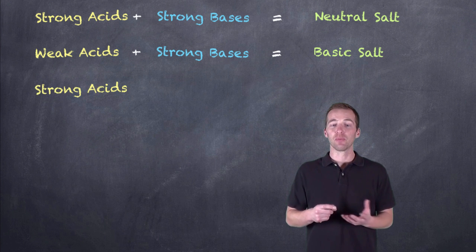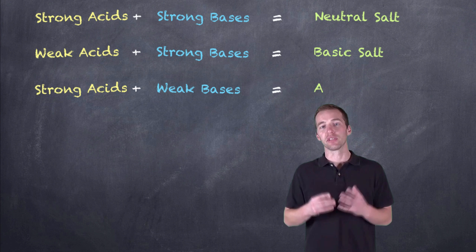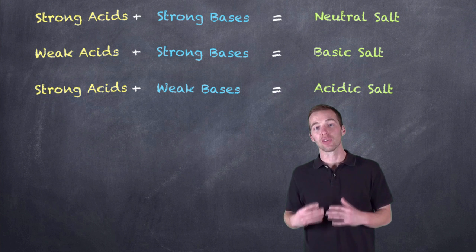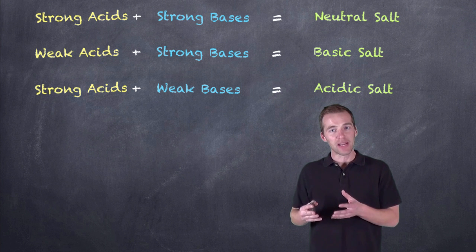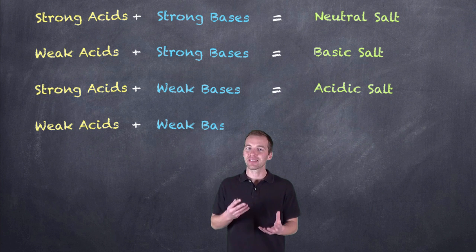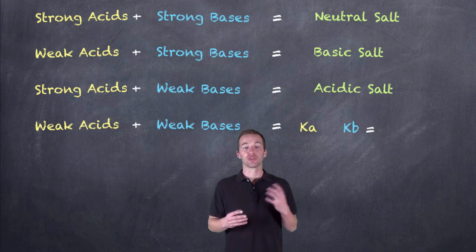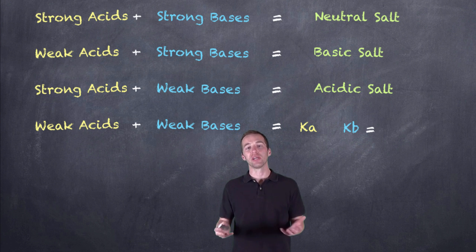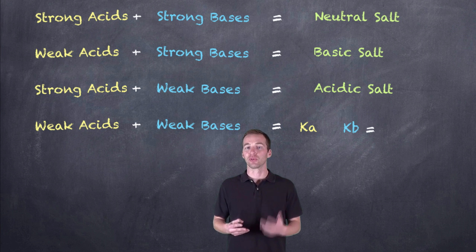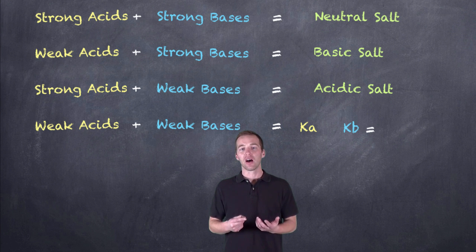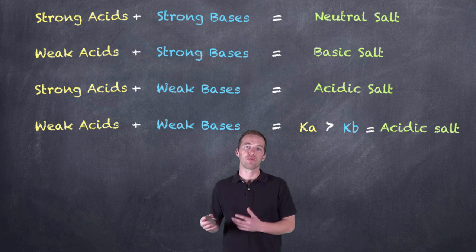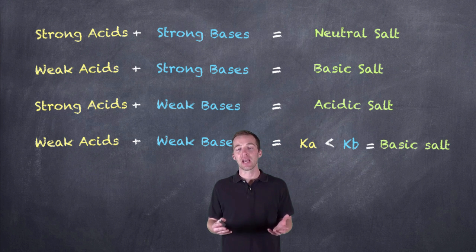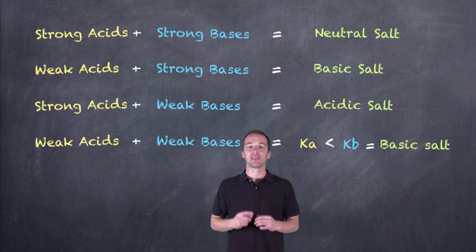A strong acid combined with a weak base would produce an acidic salt, and therefore this solution, once the reaction was complete, would have a pH lower than neutral or lower than 7. Weak bases and weak acids, when they combine — well, that's a little tougher to predict. It really depends on the strength of that weak acid and the strength of that weak base relative to one another, which will dictate whether we have an acidic, neutral, or basic solution. If the Ka of the weak acid is larger than the Kb, then we're going to form an acidic salt. If it's the other way around, where Kb is greater than Ka, we're going to have a basic salt.